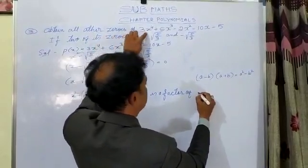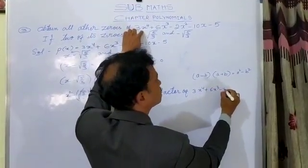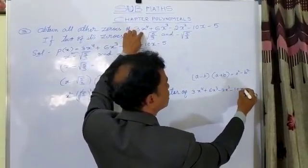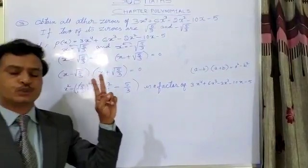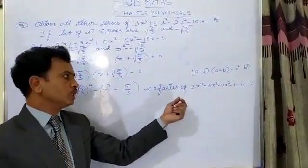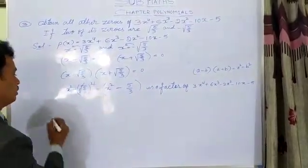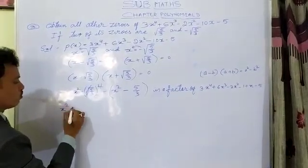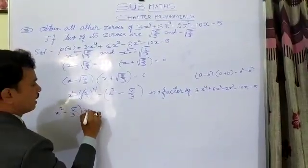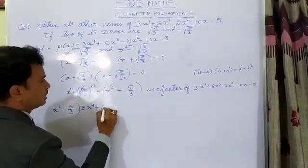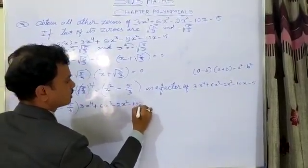Which polynomial? 3x⁴ plus 6x³ minus 2x² minus 10x minus 5. To find the remaining two zeros of this polynomial we should divide this polynomial by x² minus 5 by 3. So we set up: x² minus 5 by 3 dividing 3x⁴ plus 6x³ minus 2x² minus 10x minus 5.